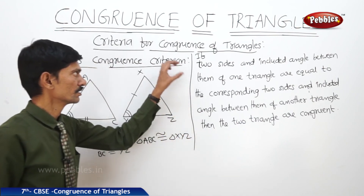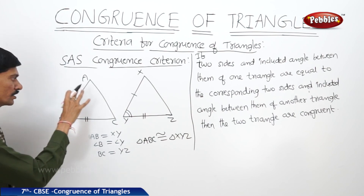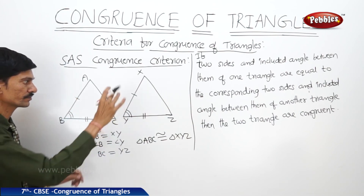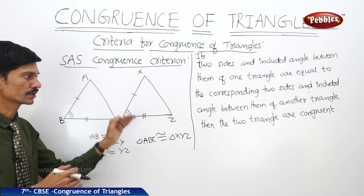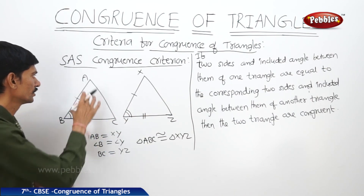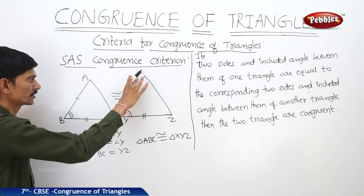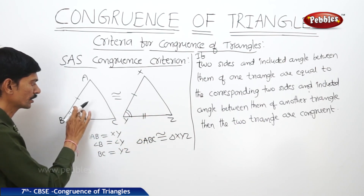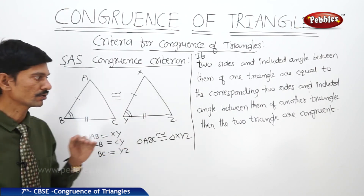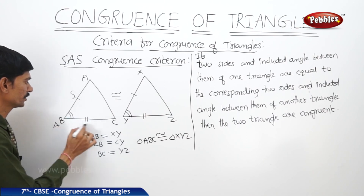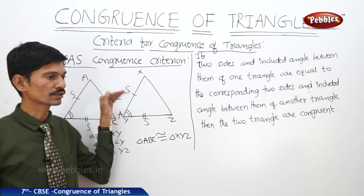According to the Side Angle Side Congruence Criterion: if two sides and the included angle of one triangle are respectively equal to the two sides and included angle of a second triangle, then the two triangles are congruent. So if AB = XY, BC = YZ, and included angle B = included angle Y, then by the SAS criterion, the two triangles are congruent to each other.